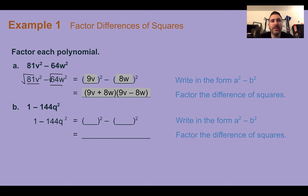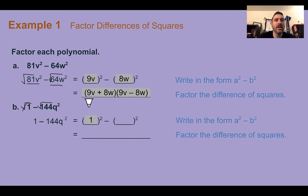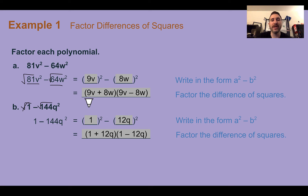In b, we have 1 minus 144q squared. We're going to do the same thing — take the square root of each term. The square root of 1 is just 1. The square root of 144 is 12 and the square root of q squared is q. So my final factored form would be 1 plus 12q and 1 minus 12q.